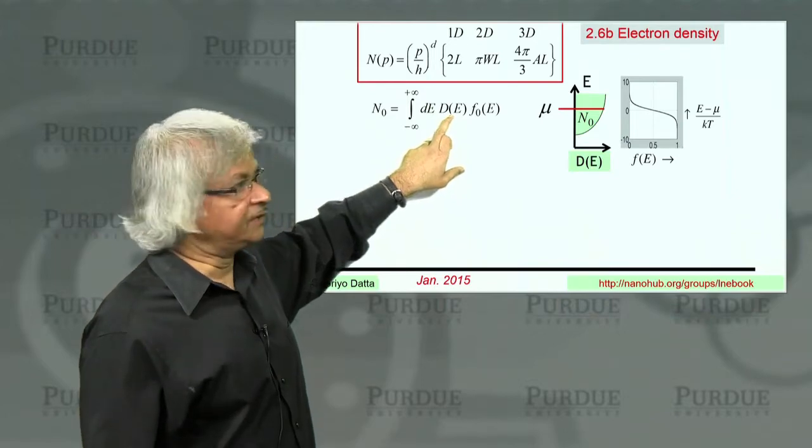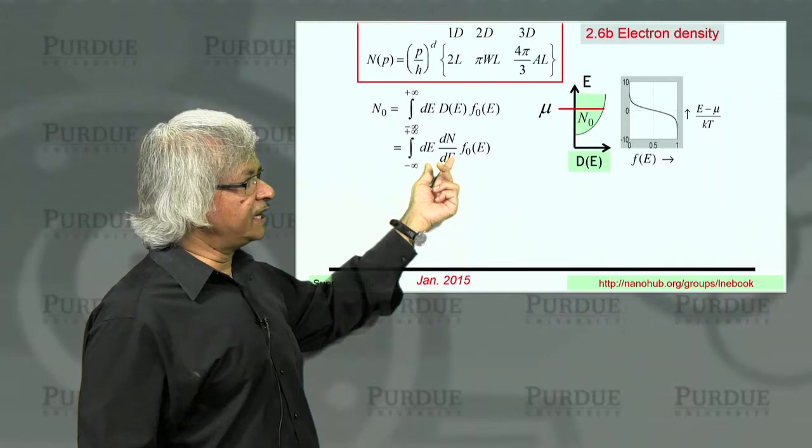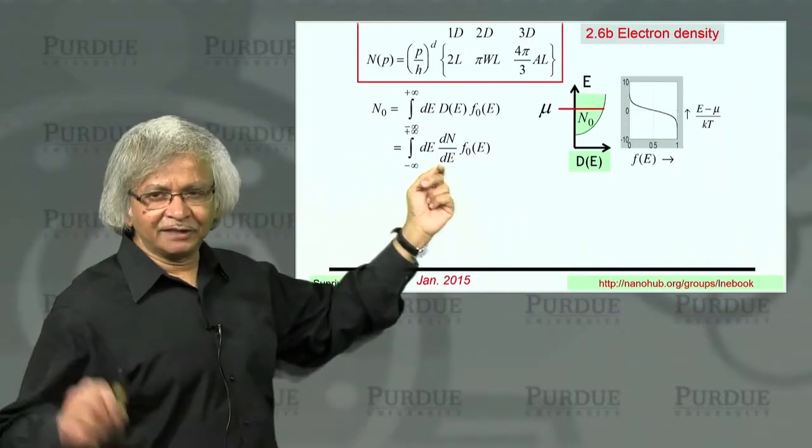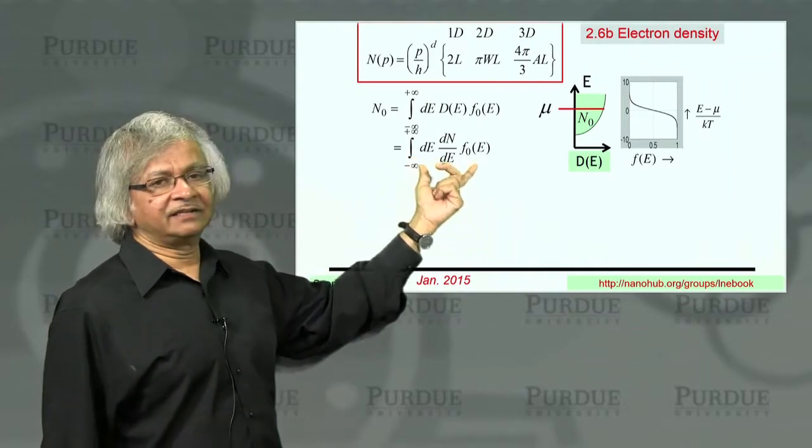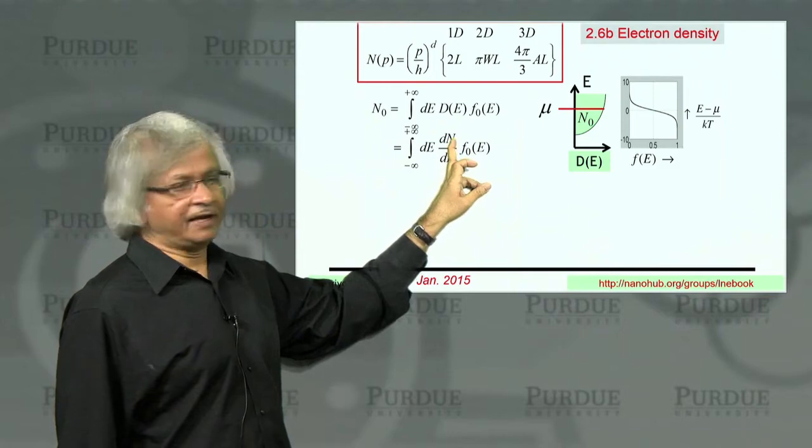Now, what's d? Well, that's the derivative of capital N. So you have dN dE times F0. Now, what you could do is, there's a bit of algebra. You can integrate this by parts. That is, you have two functions here, N and F0.